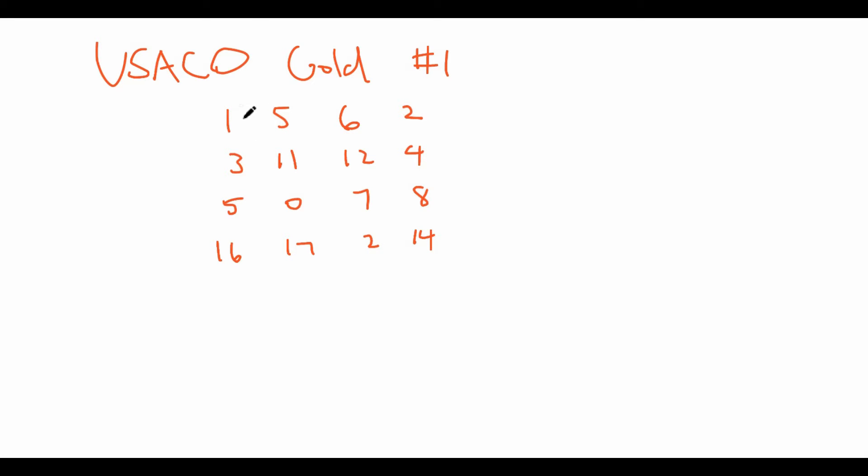The problem goes like this. Suppose that we have Bessie the cow, as all USACO problems have, start at the top left corner, so the corner that's labeled 1. And then she wants to get to the bottom right corner, labeled 14. So she moves along this grid. Let's draw the grid actually. So there's this grid, and then she moves along this grid, moving to either vertically or horizontally adjacent squares.